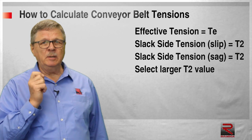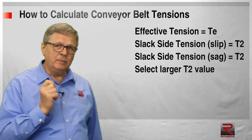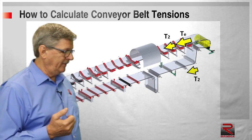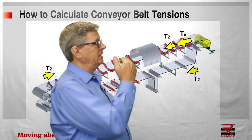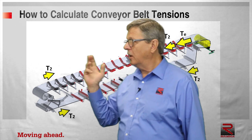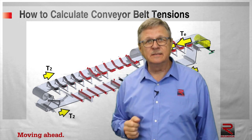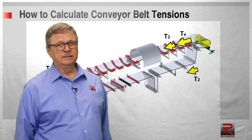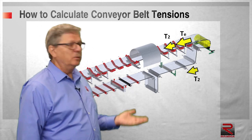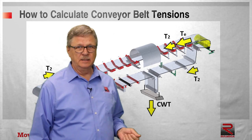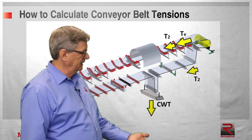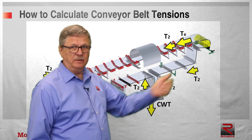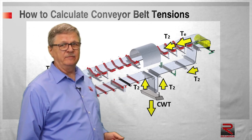Once we know the minimum belt tension to prevent sag and the minimum belt tension to prevent slip, we select the larger of the two values. Once that value is selected, we can assume it is distributed throughout the entire conveyor belt from head to tail. For example, if slack side tension needs to be 1,000 pounds, in the case of a counterweighted take-up the counterweight must be 2,000 pounds, because the 2,000 pounds provided by gravity will be resisted with an equal and opposite force of 1,000 pounds in each of the two strands of conveyor belt.